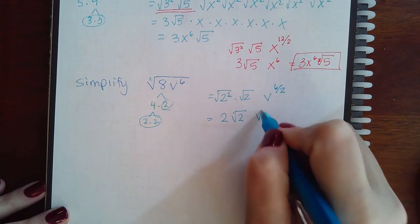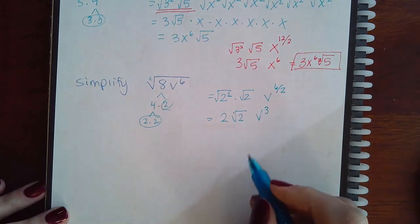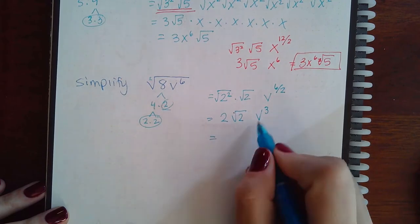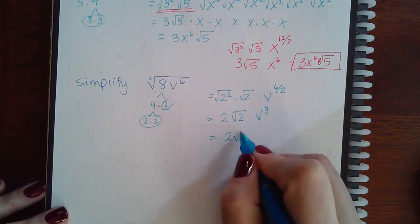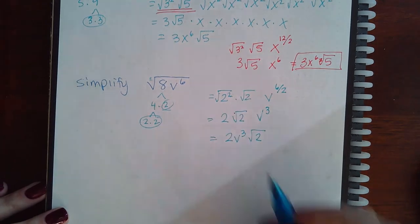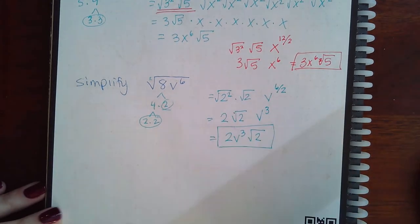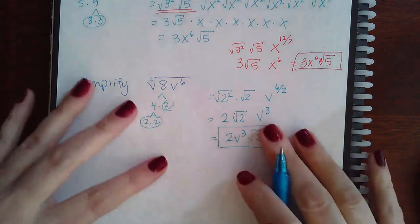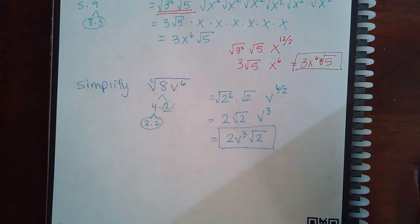So the square root and the power cancel, you have square root of 2, and then here that reduces to v to the third power. And so then all you do is put the numbers that are not inside the radical in the front and then the radical part at the end. And that's the final answer there. And so this is the technique that we'll be using throughout the rest of the problems.